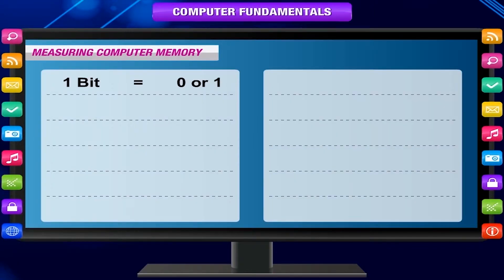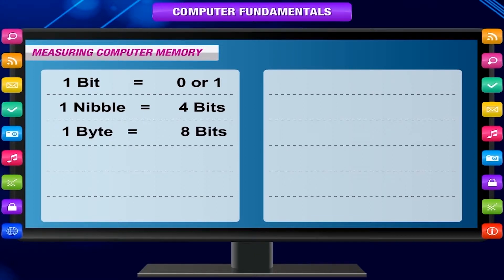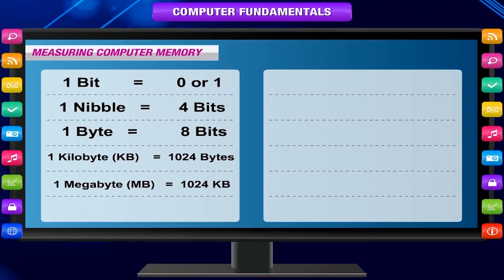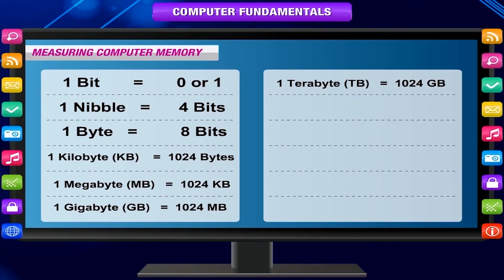1 bit is equal to 0 or 1. 1 nibble is equal to 4 bits. 1 byte is equal to 8 bits. 1 kilobyte or KB is equal to 1024 bytes. 1 megabyte or MB is equal to 1024 KB. 1 gigabyte or GB is equal to 1024 MB. 1 terabyte or TB is equal to 1024 TB.